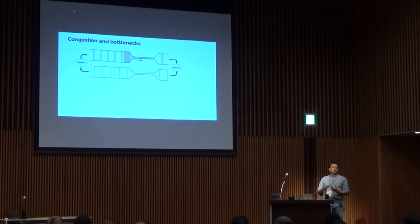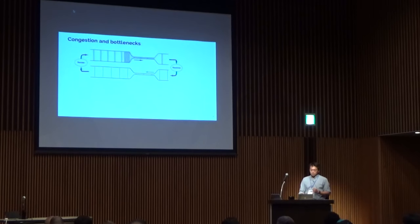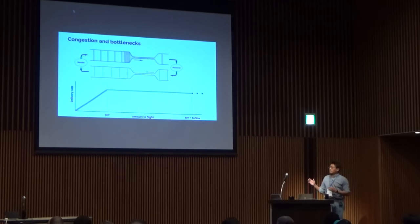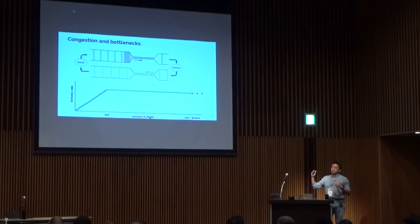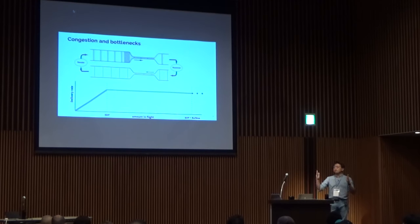In the meantime, ACKs are still coming back, and if you look at the spacing of the ACKs, that gives you a sense of how fast packets are being delivered. If you look at the amount of packets in flight relative to the delivery rate, as you crank up the rate it keeps increasing until you reach 100 megabits per second. Then the rate plateaus, and every additional packet you send into the network just turns into queues. So the amount of in-flight data continues to grow until it hits the buffer size, where you get packet losses due to buffer overflow.